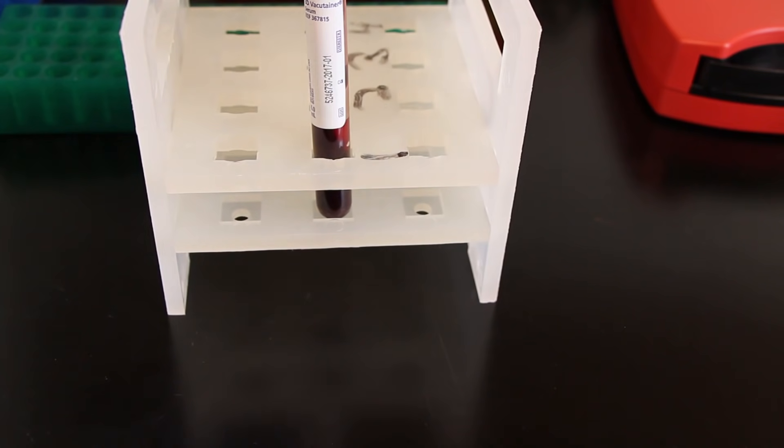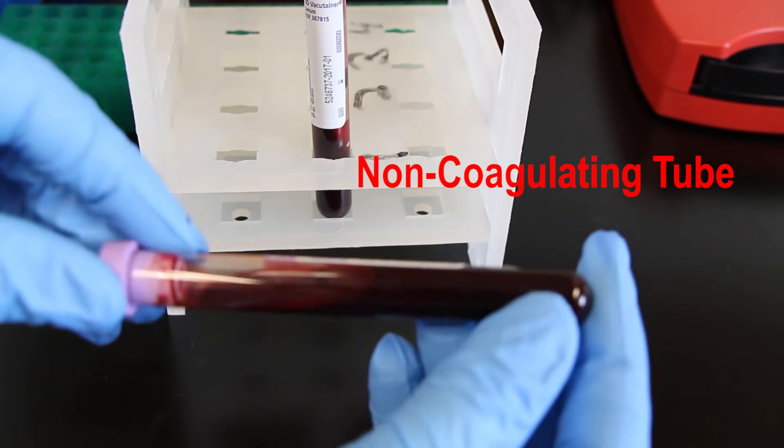Then you're going to take the blood and you're going to set it upright in a tube holder and allow the blood to clot if it is a coagulating tube, or you can spin it right away if it's a non-coagulating tube.